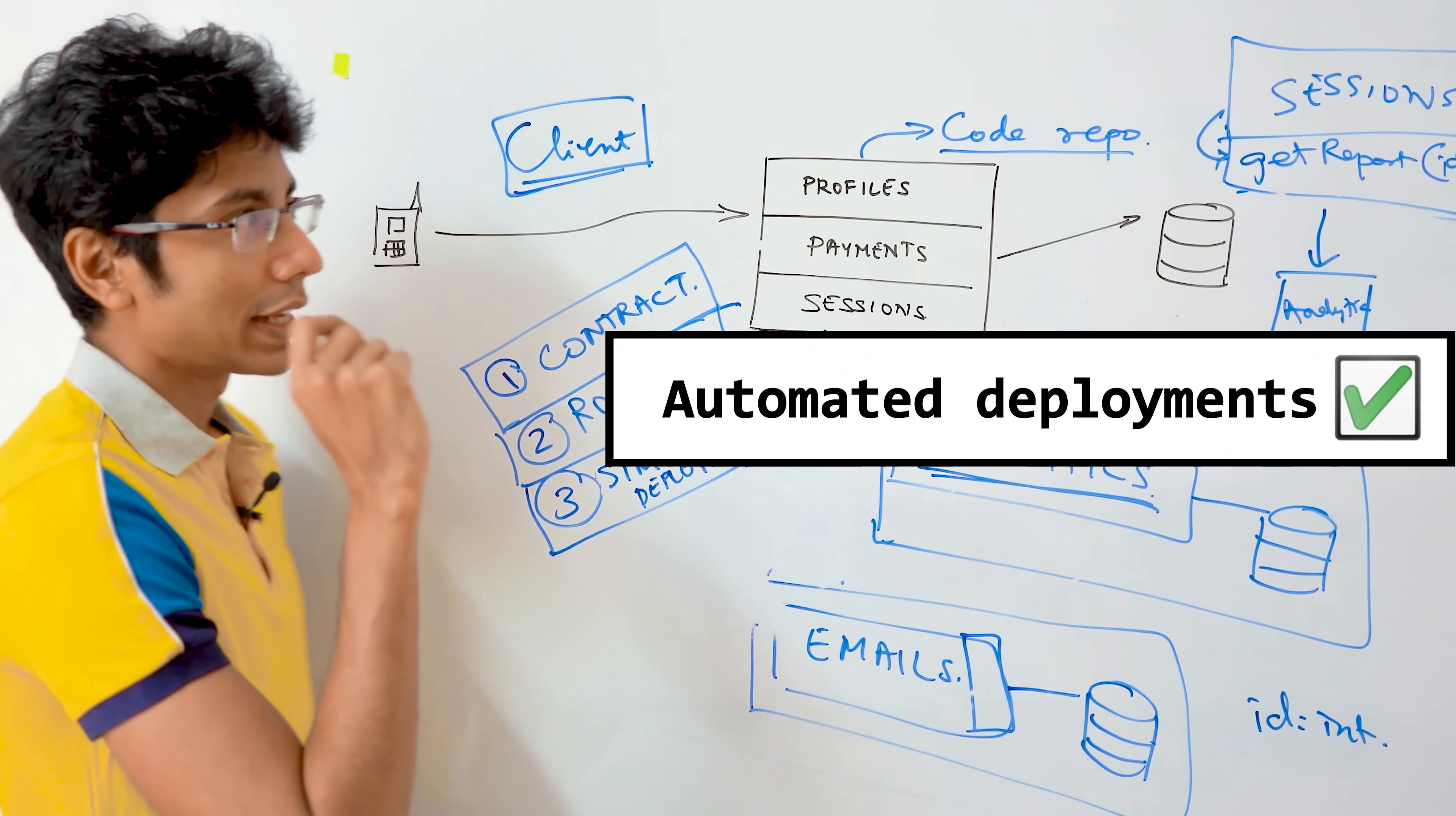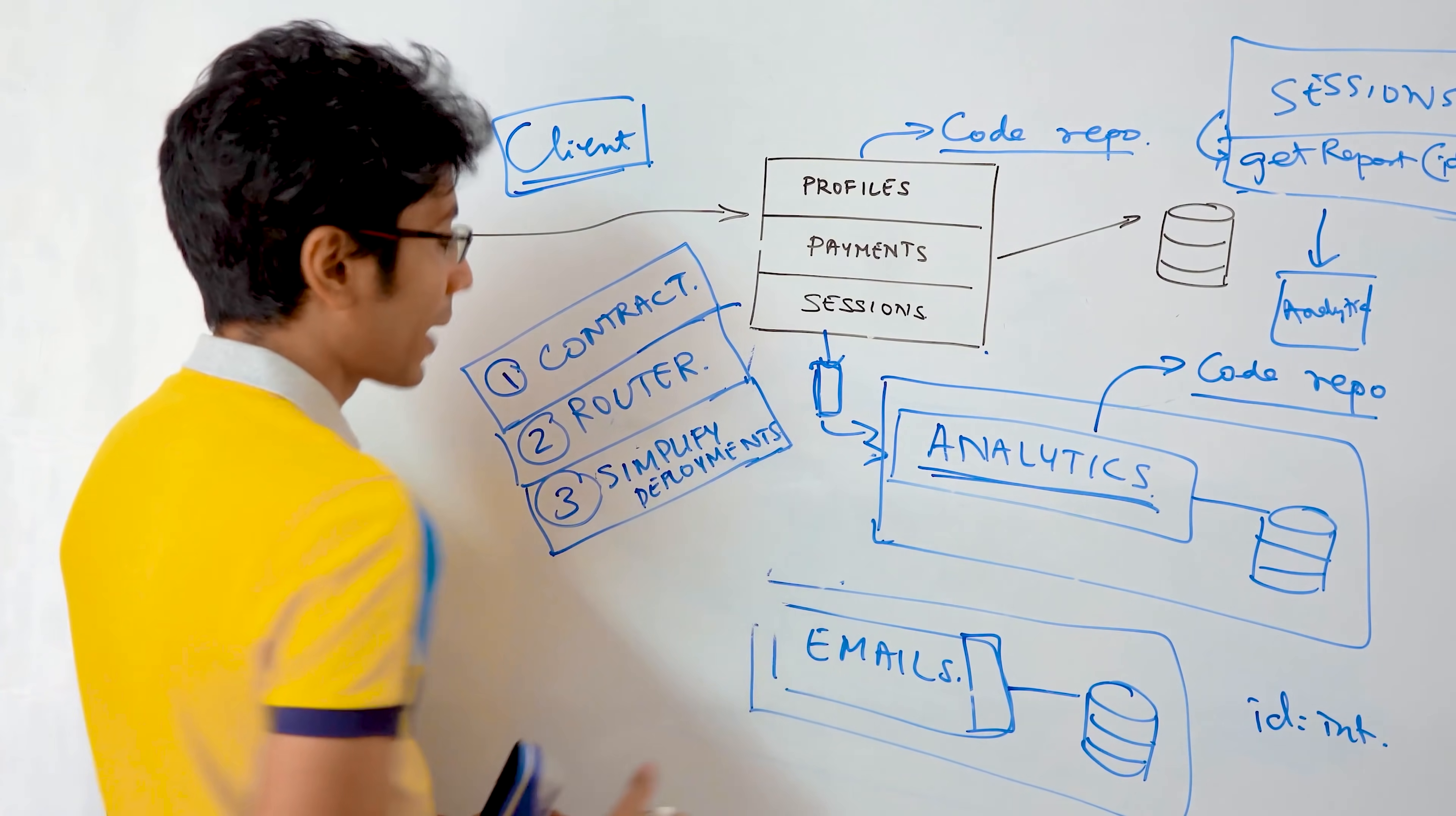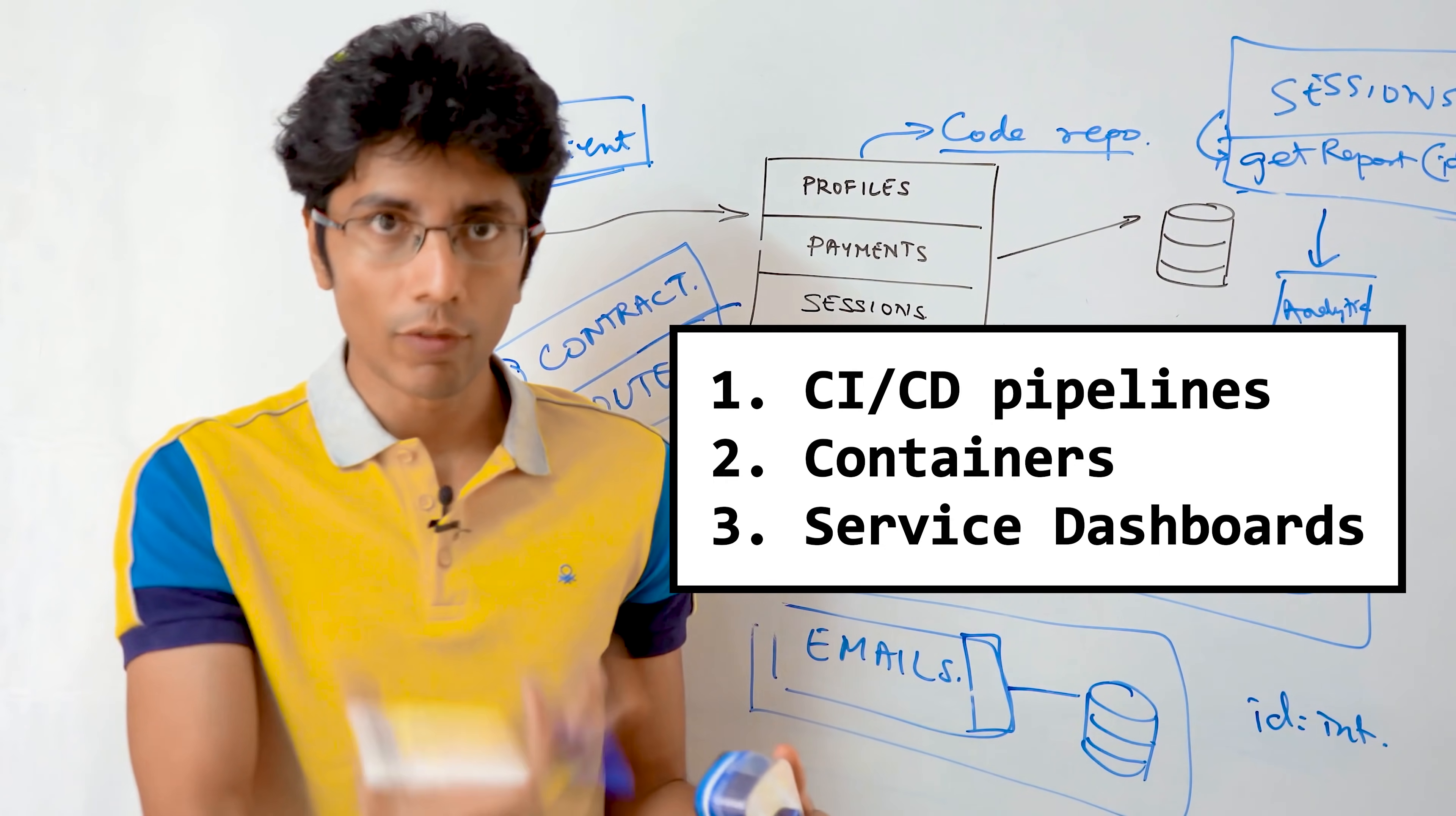Maybe on every git push to master, you want the deployment to be there. Because your tests have run through and you're sure that everything is fine. So you want to simplify deployments by using tools like Jenkins. You want to simplify deployments by actually using containers instead of deploying it on a box that makes your DevOps team happier.